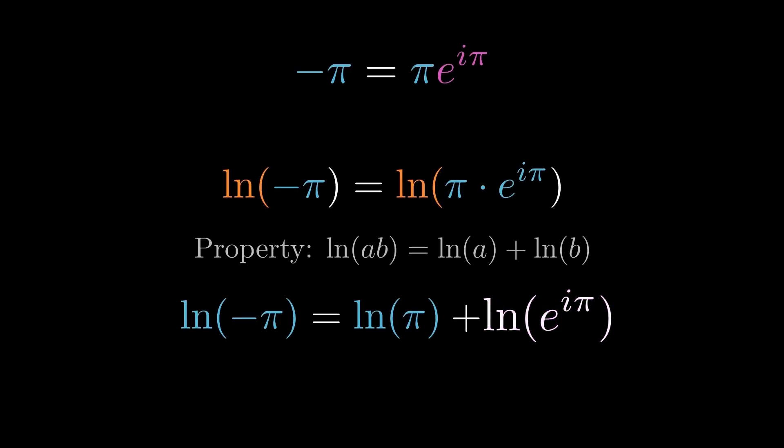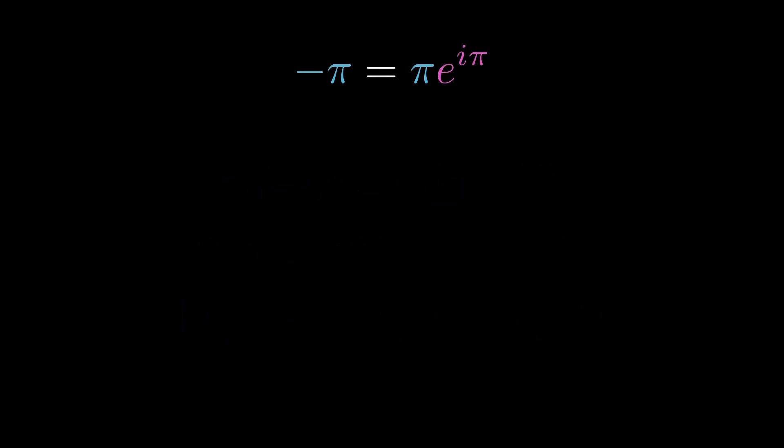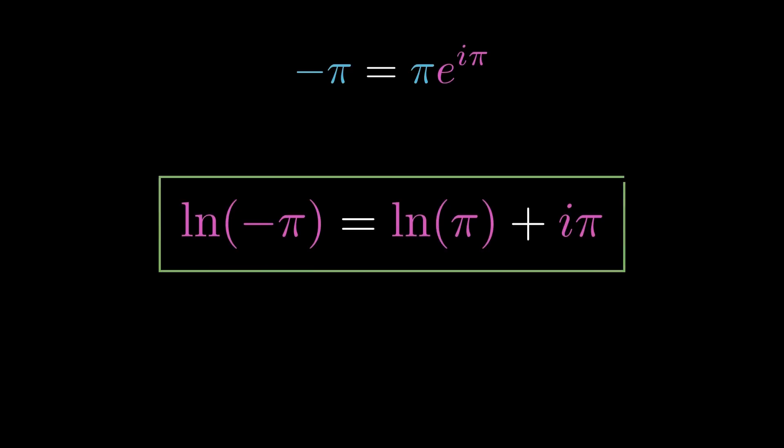Look at the second part. The natural log and the exponential are inverses. So they cancel each other out. Leaving us with the exact solution, the natural log of positive pi, plus i times pi.